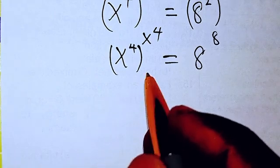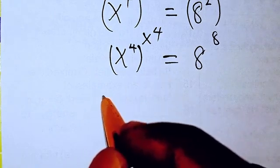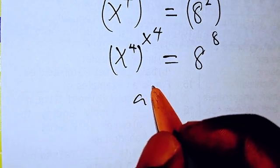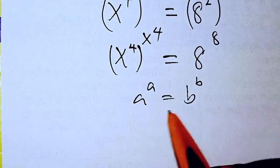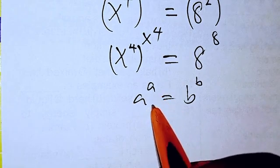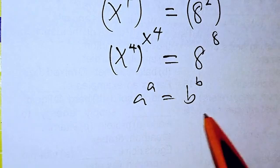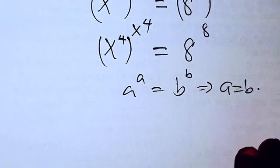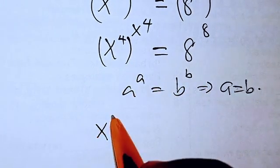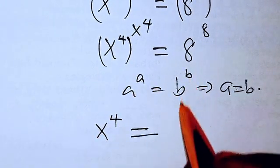So we can conclude that if you have a^a = b^b, if they are equal, then the bases are the same, so a = b. We're going to use that here: x^4 = 8.